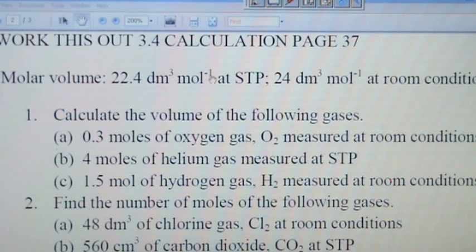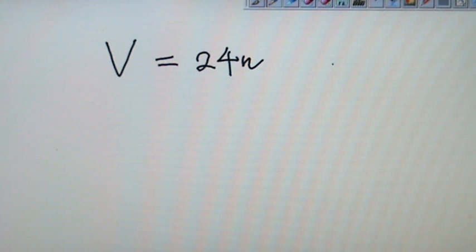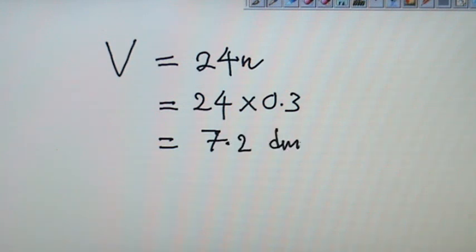So number 1, calculate the volume of the following gases. 0.3 moles of oxygen gas measured at room condition. So you remember the formula, room condition you use 24n. So the question asks for 0.3 moles of oxygen gas. They want the volume. So 24 times 0.3 you will get a figure of 7.2 dm³. That's for the first question, that would be question 1a.